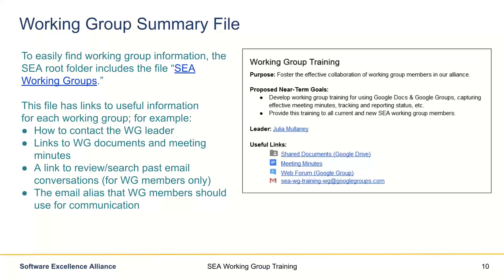It describes a list of each of the working groups in our alliance with the purpose, the currently proposed near-term goals, and information about how to contact the leader. You can click on that link to send that person an email, and then also useful links. These useful links may vary from one working group to the next, but will generally include a quick pointer to their folder on Google Drive, a quick jump to the folder where they store their meeting minutes, as well as a link to the archived communications that working group has had amongst its members.